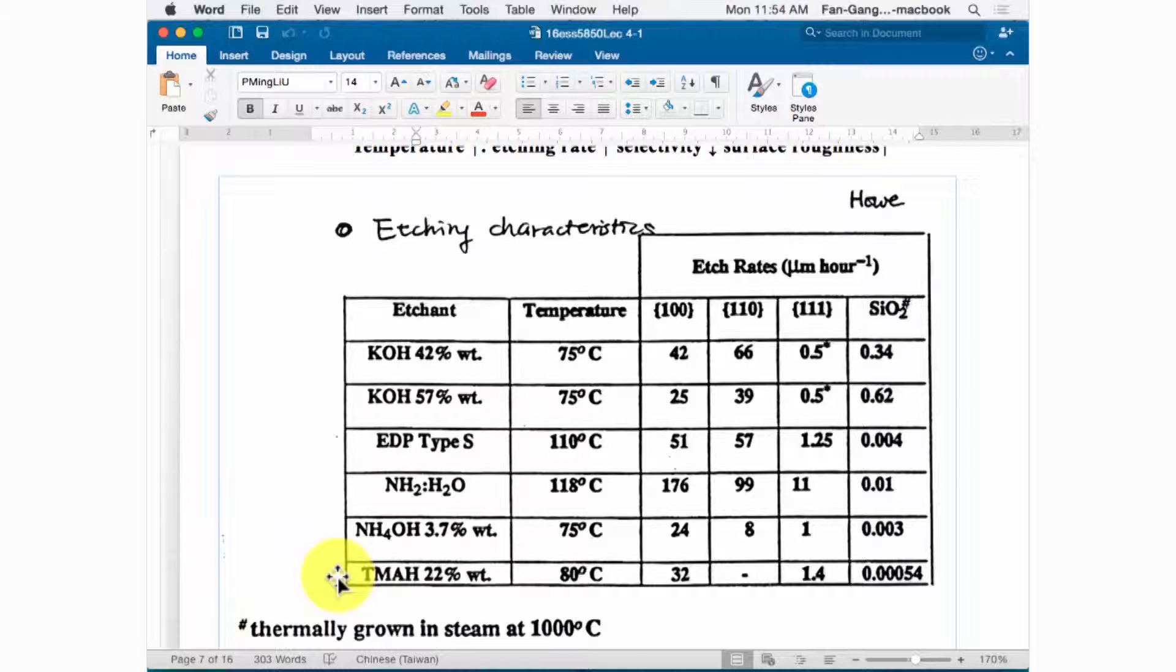In lab course this afternoon, some of you are taking this course, we will use TMAH for etching. Now we will come back to the corner compensation topic. We will consider two different HNR, one is KOH, one is EDP. Keep in mind the KOH has 100 as the second slowest phase in addition to 111. So 111 is the slowest one and 100 is the second. For EDP it's opposite, 110 is the second.